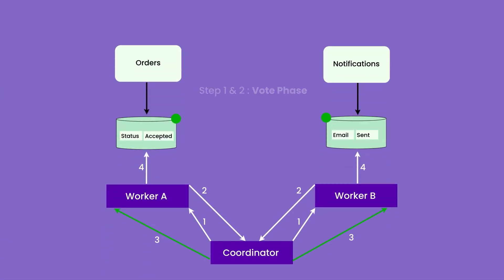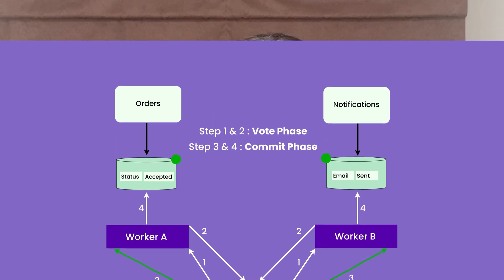It looks simple, but the problem comes when you have a very big system. If these databases are huge and the rows we are talking about sit in tables with millions of rows, having locks on these rows for multiple transactions will increase the latency of the system. It is also risky to hold locks on such huge tables for a longer period of time. This is one of the huge downsides of this particular approach.